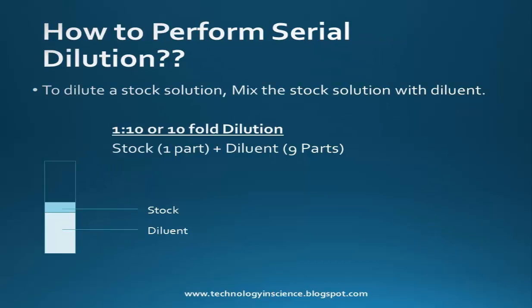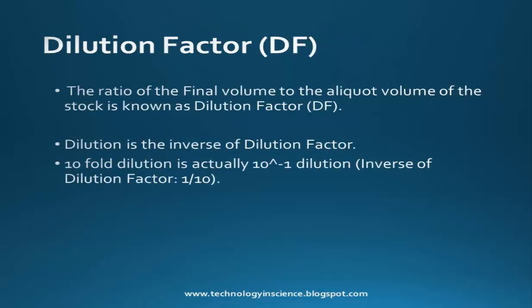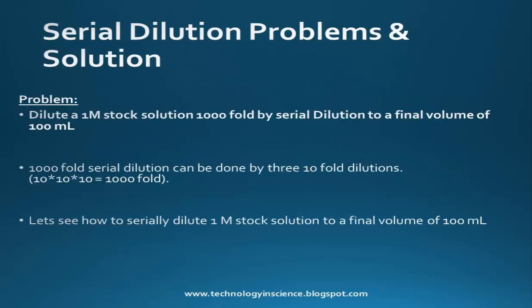For a 10-fold or 1-to-10 dilution, 1 part of the stock and 9 parts of the diluent are taken. The dilution factor is the ratio of the final volume to the aliquot volume of the stock. Dilution is the inverse of dilution factor — a 10-fold dilution is 10 to the power of minus 1, and the dilution factor here is 10.